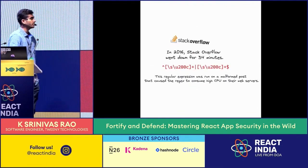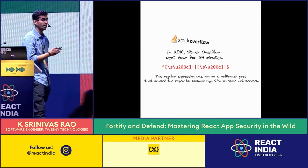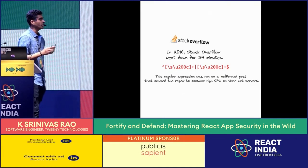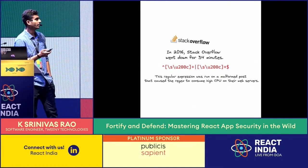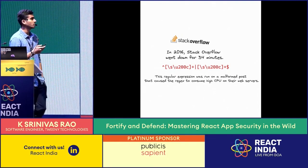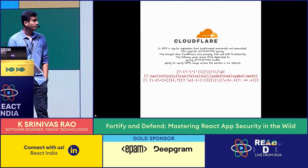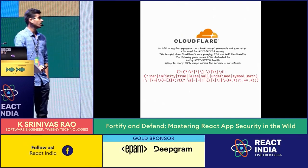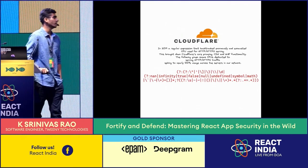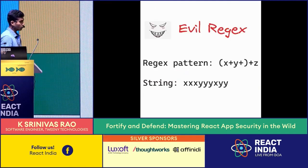In 2016, Stack Overflow went down for 34 minutes because of a simple regular expression. They ran it against a malicious post content and all their browsers hung for 34 minutes, with their server's CPU utilization hitting 100%. Similarly, in 2019, some Cloudflare services went down when they ran a regular expression against a database query.